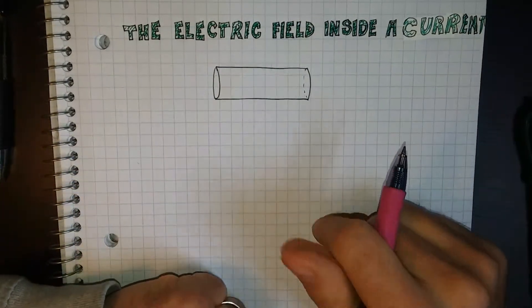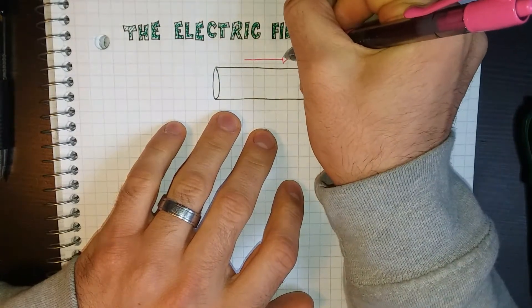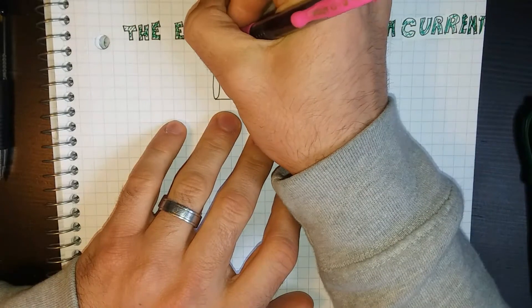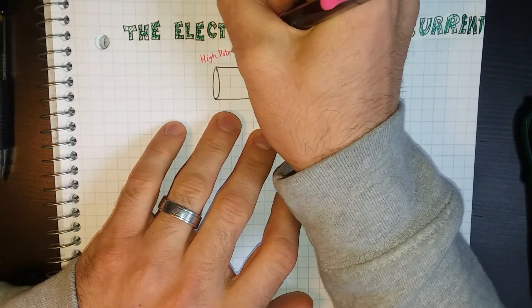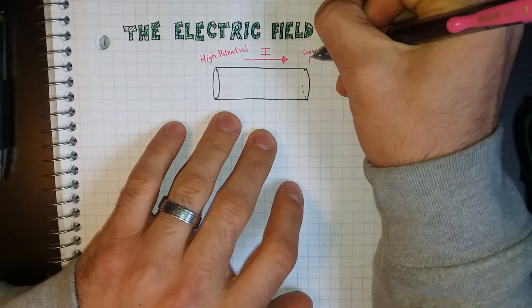This is a picture of a wire. We're going to say the current is going this way in here. I'll put a little I like that, meaning that this is the high potential over here, and this is the low potential over here.